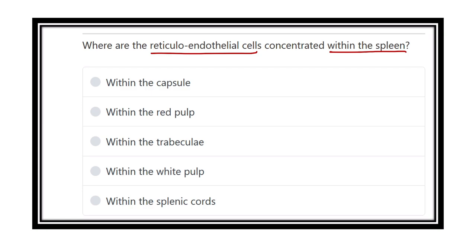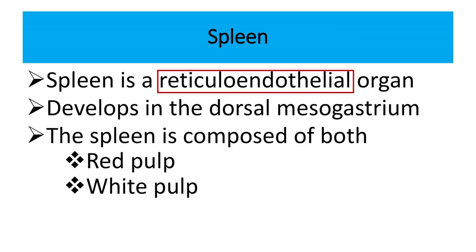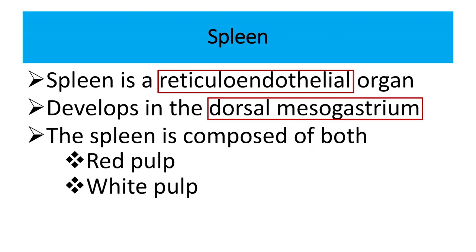The spleen is a reticuloendothelial organ, meaning it contains a reticular part and other important components. It develops from the dorsal mesogastrium. These two points are very important: first, it is a reticuloendothelial organ; second, it develops from the dorsal mesogastrium. The spleen is composed of red pulp and white pulp — two distinct areas.